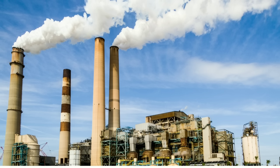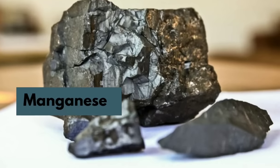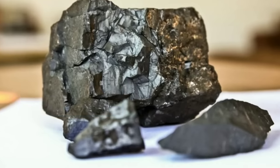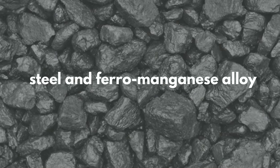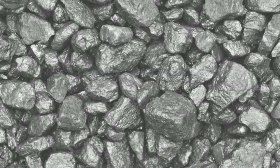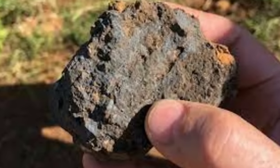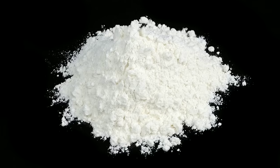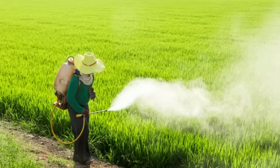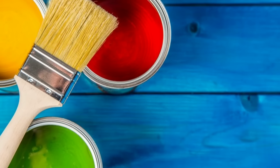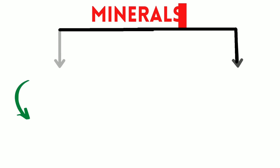Let's talk about the use of steel and ferro-manganese alloy production. Approximately 10 kg of manganese is required to manufacture 1 ton of steel. Manganese is also used in the manufacture of bleaching powder, insecticide, and paint.